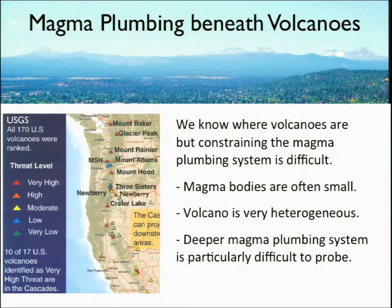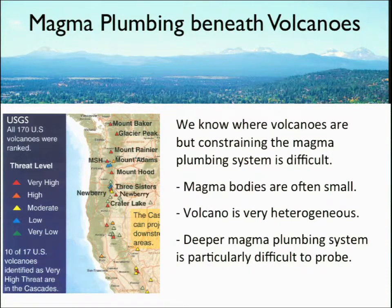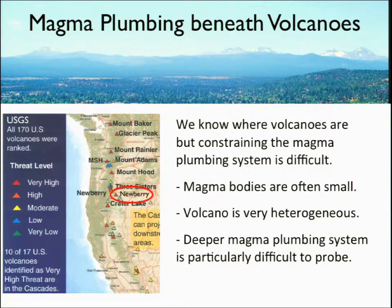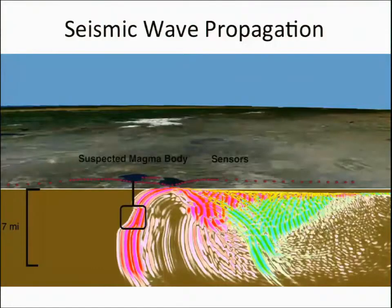In particular, the deep magma plumbing system is especially difficult to understand, and I'm not going to address that in this talk. This is a map from the USGS that shows different volcanoes in the Pacific Northwest and their hazard level. You can see the Cascade Arc. I'm going to talk about Newbury Volcano, which is located just behind the volcanic arc. It is one of the very high-threat volcanoes and is very hot, so it's a good target.